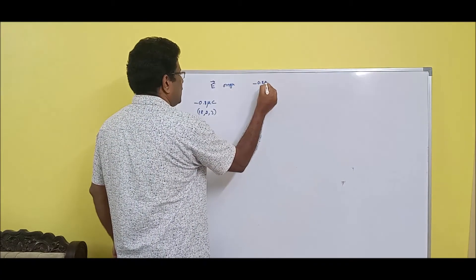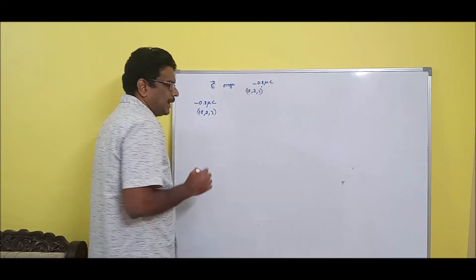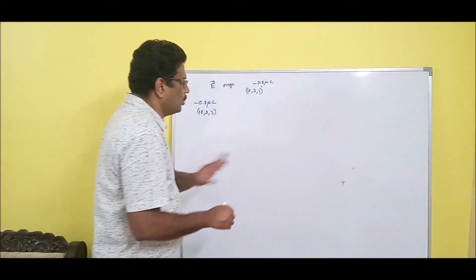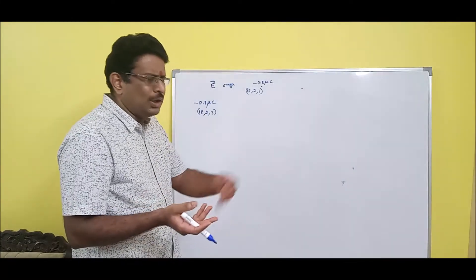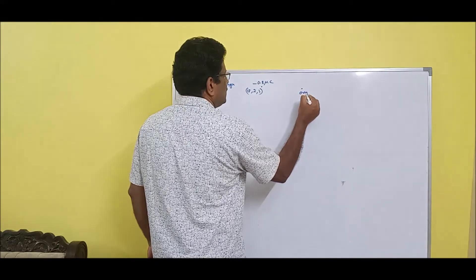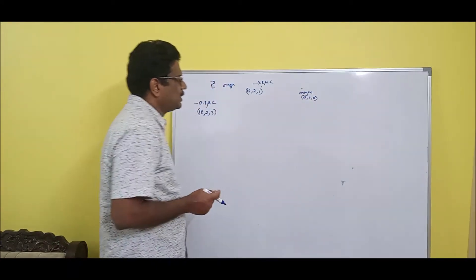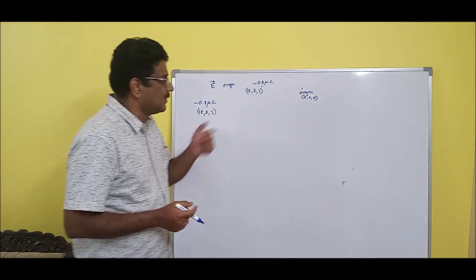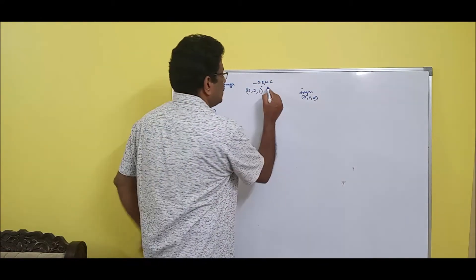So we have a charge of minus 0.8 micro-coulombs located at (18, 2, 3). There is another charge (the test charge — one coulomb is understood) at the origin (0, 0, 0). We need to find the electric field intensity at the origin. The field point, the origin, is very important here.